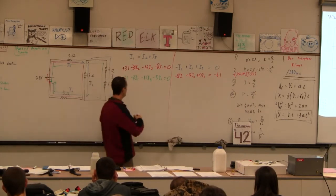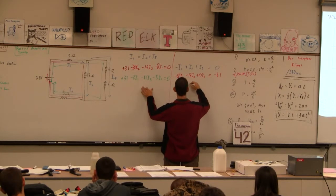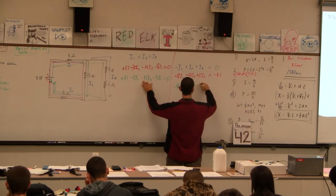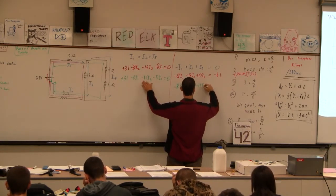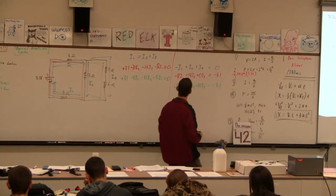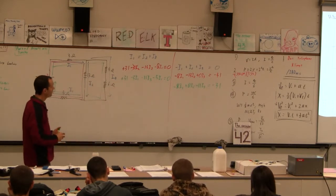Now this thing I can rewrite this way. I can go minus 8I1 plus 0I2 plus, let's see, I3 minus 11. So minus 11I3 equals minus 31. And now, of course, we've got a matrix that we can solve.